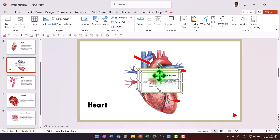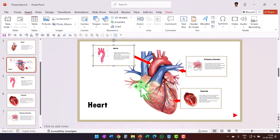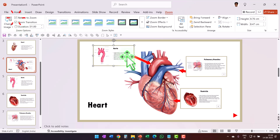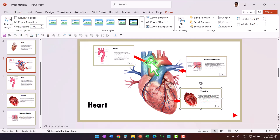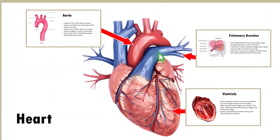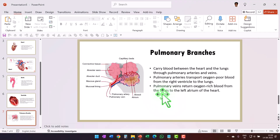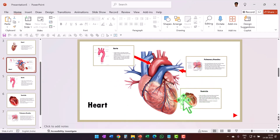Now you can see I have these small instances of these various slides. I just need to place them in the right place and then follow the exact same process as we did earlier — select the individual slide zooms, go to Zoom, and click on Return to Zoom so that we are able to get back to this page when we click on these individual slide zooms. When I go to Slideshow, click here, explain, click and get back to this page. It is exactly the same thing — we are just repeating the process to create this substructure.